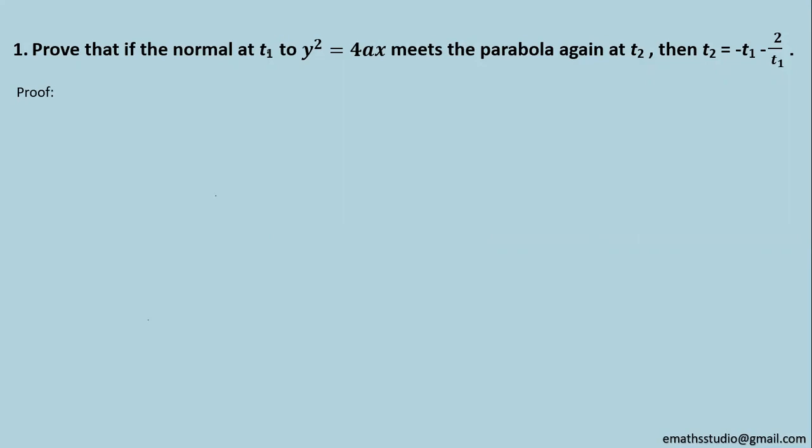Here is the proof. First of all, I am writing equation of normal at t₁ to y² = 4ax and that equation is y = -t₁x + 2at₁ + at₁³. Now this normal meets the parabola again at point whose parameter is t₂ and then that point I am considering as Q which is (at₂², 2at₂).